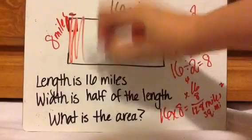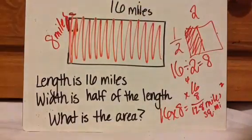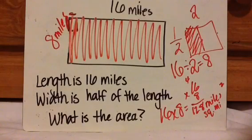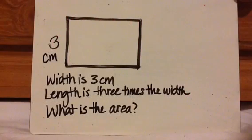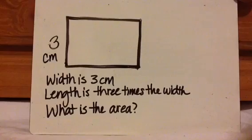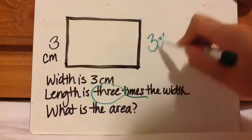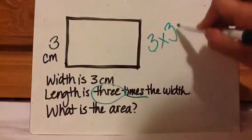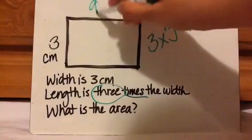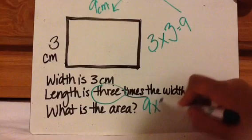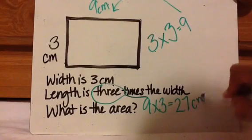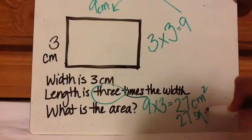Area is all about space filled up or something covering a designated space. Here's one I'd like you to solve. Press pause, solve the problem, press play when you're ready to check. Width is 3 centimeters, length is 3 times the width — so 3 times 3 gives you a length of 9 centimeters. Then to find area, you do 9 times 3. That's 27 centimeters squared or 27 square centimeters.